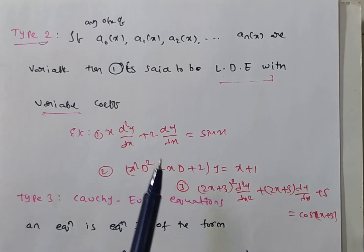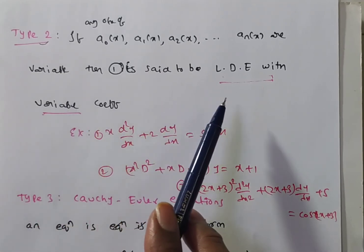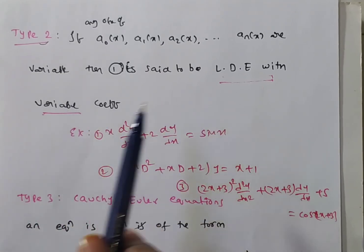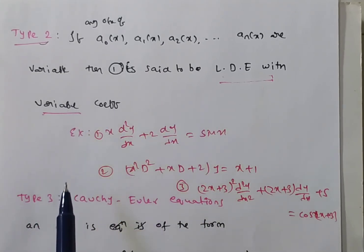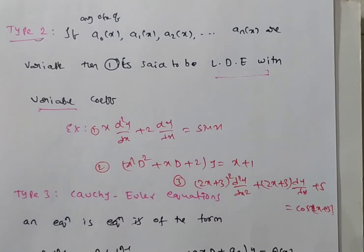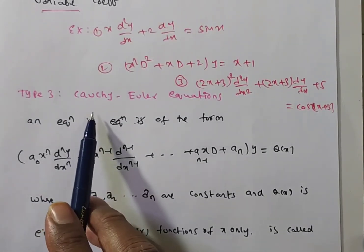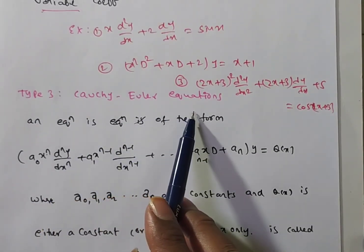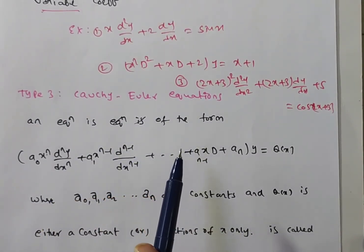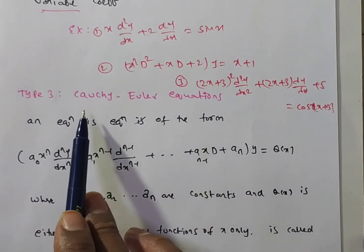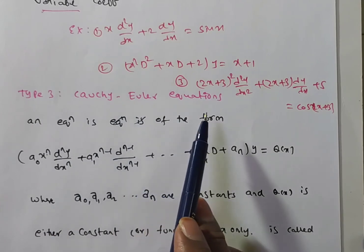We can divide linear differential equations with variable coefficients into two types. The first type is the Cauchy-Euler equations.